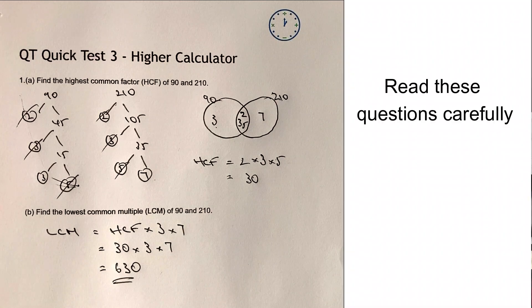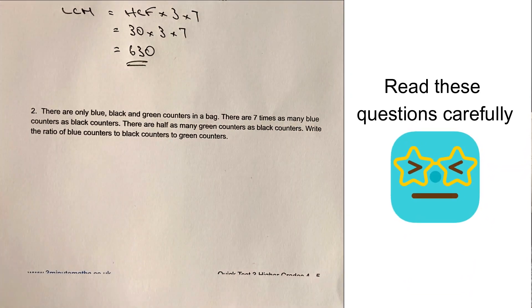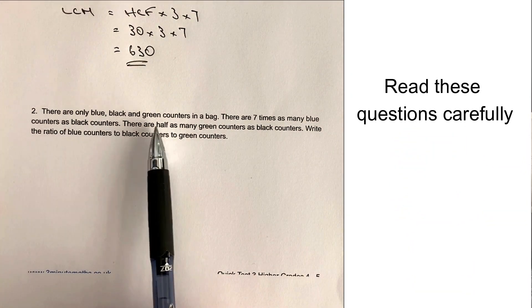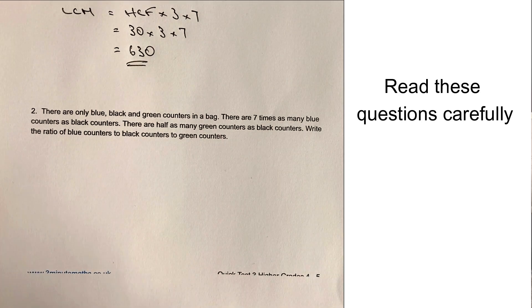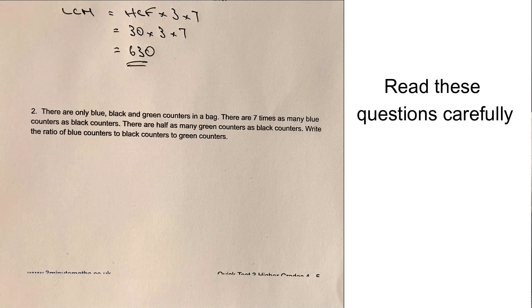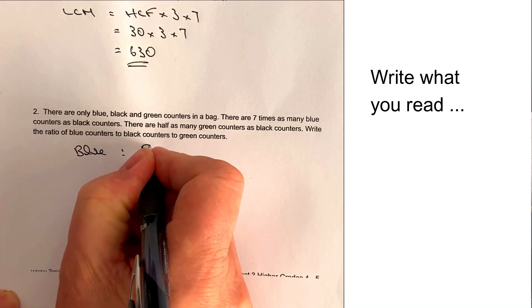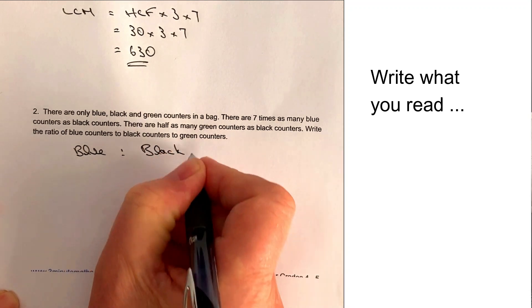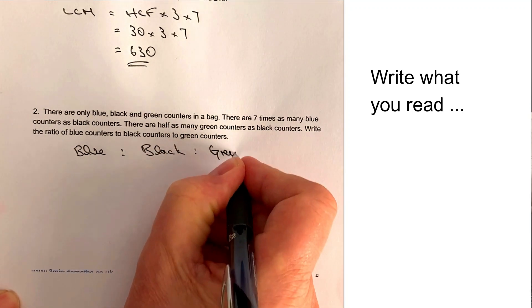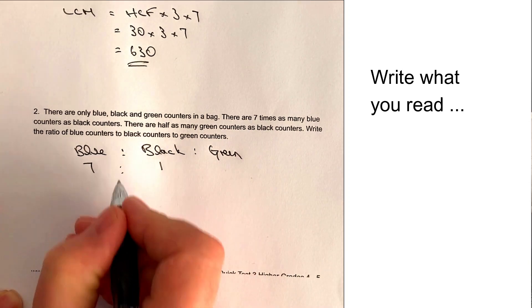Okay, so that's a fairly straightforward way of doing that kind of question. Please do add a comment below. I can always put you onto a playlist with some more examples of HCF and LCMs. Let's move on then to question number two. So question number two is one of those very wordy type questions that you've really got to spend a bit of time just kind of working through. So it says there's only blue, black and red counters in the bag. And then it's seven times as many blue counters as black counters.